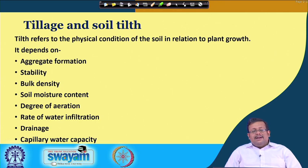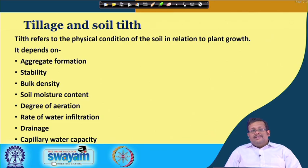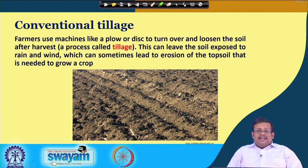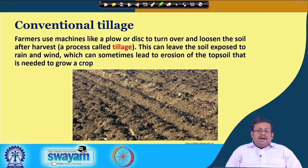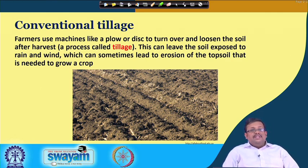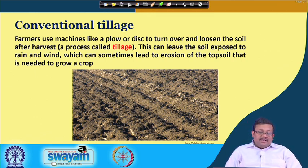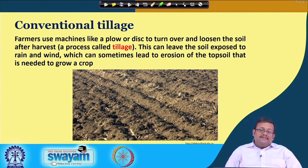Tillage is a term which shows the preparation of soil to provide a favourable physical condition for plant growth and germination, whereas tilth is the physical condition achieved due to tillage. The first kind of tillage is conventional tillage, which we generally see in Indian fields. In conventional tillage, farmers use machines like plough and disc to turn over and loosen the soil after harvest, which can leave the soil exposed to rain and wind, sometimes leading to erosion of the topsoil needed for crop growth.